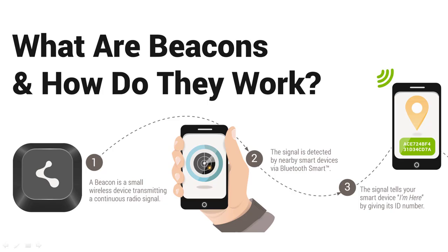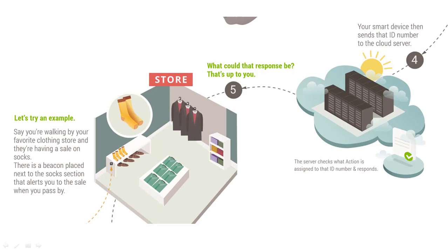You may ask: what are beacons and how do they work? A beacon is a small wireless device transmitting a continuous radio signal. The signal is detected by nearby smart devices via Bluetooth. The signal tells your smart device 'I'm here' by giving its ID number. For example, say you're walking by your favorite clothing store and they're having a sale on socks.